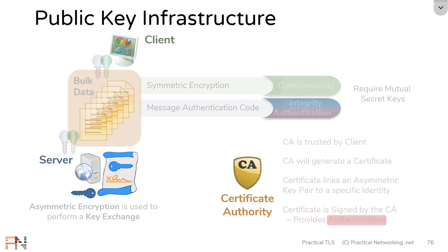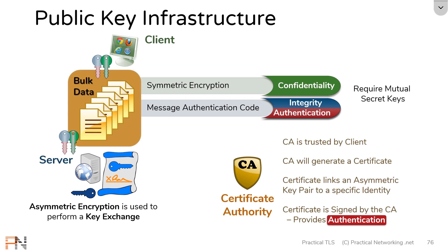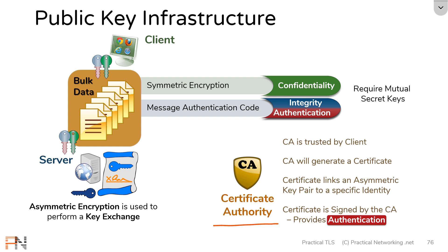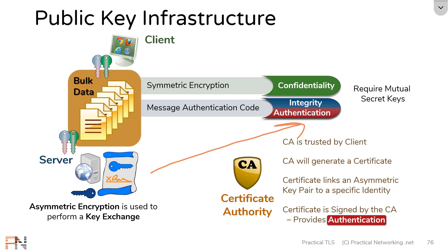In the last lesson, we picked apart this slide. We talked specifically about how the client and the server were trying to do symmetric encryption for confidentiality and a message authentication code for integrity. We talked about how authentication didn't come into play until the certificate authority arrived on the scene. The certificate authority provided authentication of the certificate, which then provided authentication to the symmetric keys used for the message authentication code.